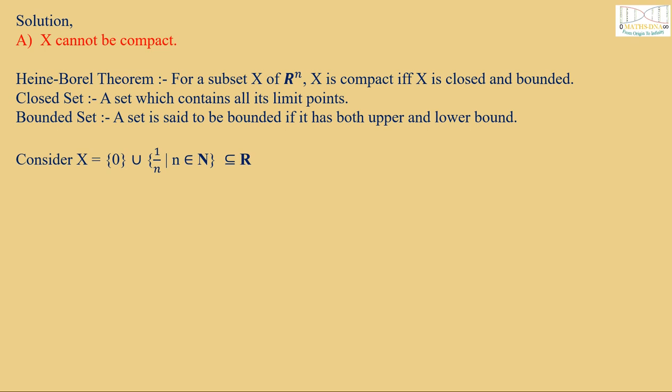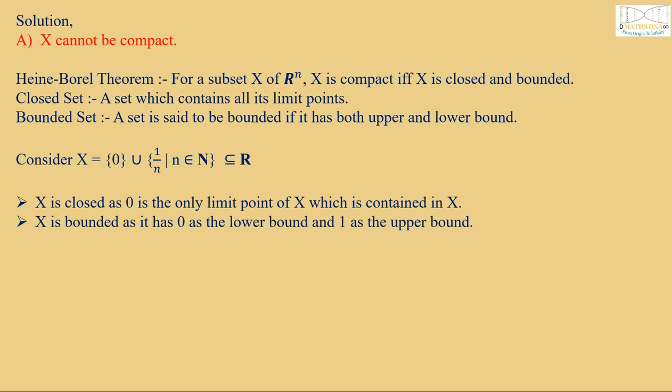Consider X = {0} ∪ {1/n | n ∈ N} ⊂ R. Here, X is closed as 0 is the only limit point of X which is contained in X. Also, X is bounded as it has 0 as the lower bound and 1 as the upper bound. Therefore, X is compact and A is false.